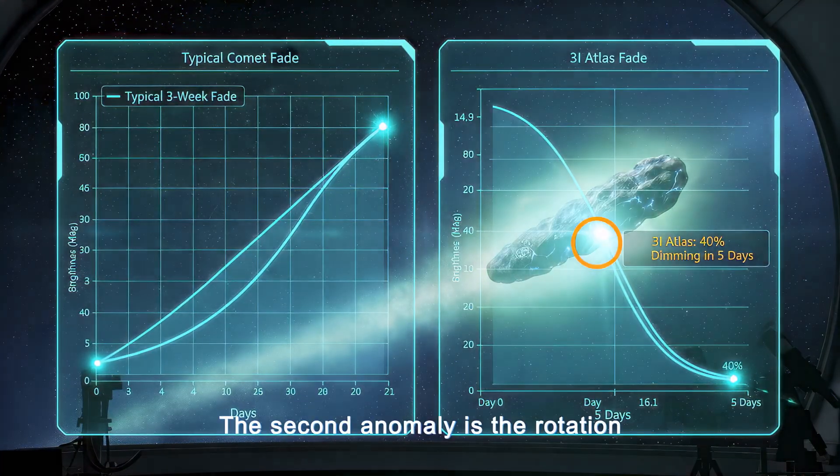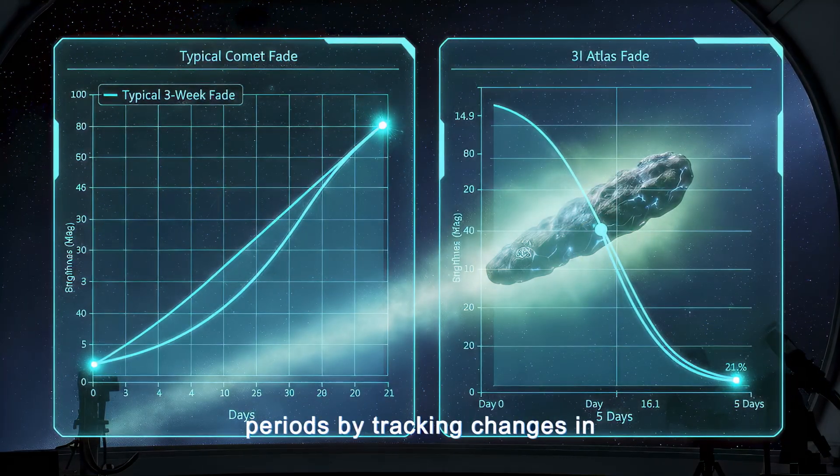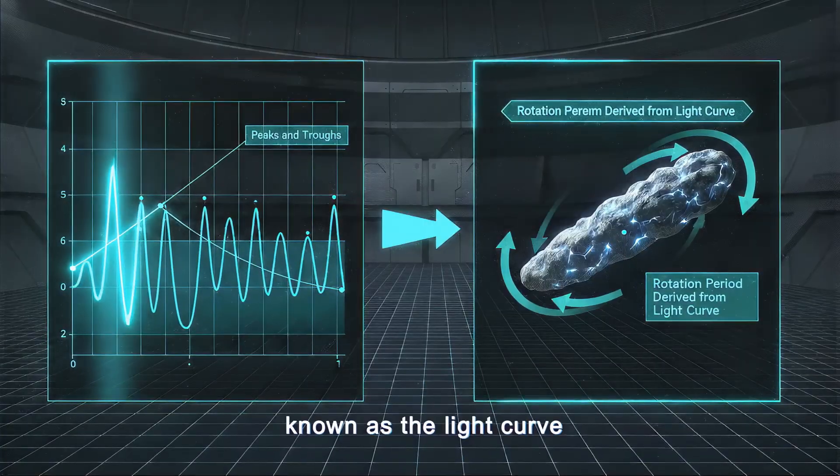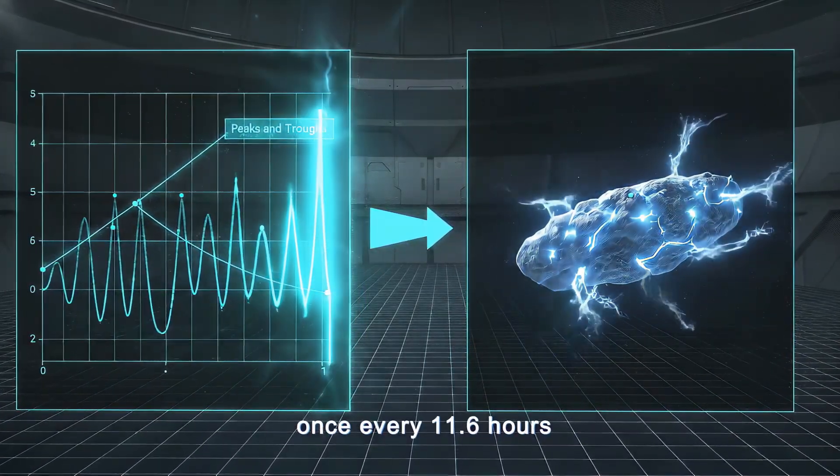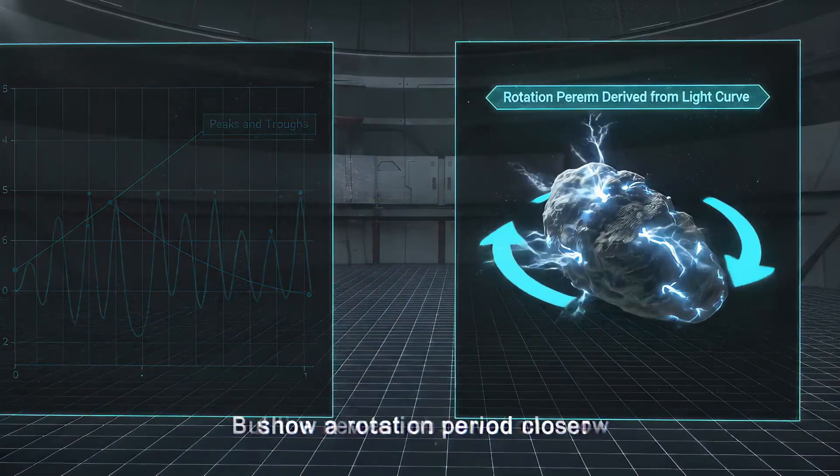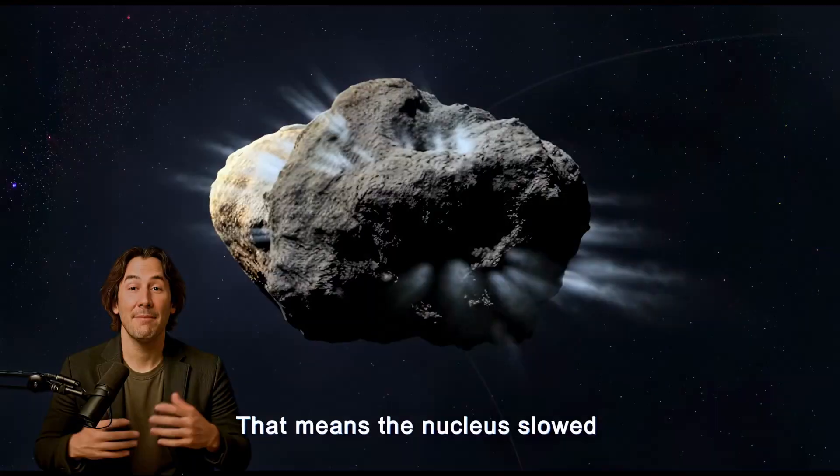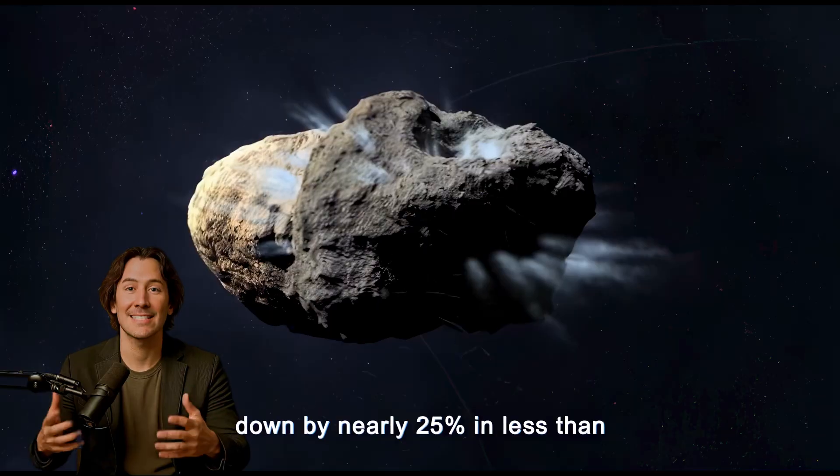The second anomaly is the rotation period shift. Astronomers estimate rotation periods by tracking changes in brightness over time, known as the light curve. Last week, the object appeared to rotate once every 11.6 hours. But the newest observations now show a rotation period closer to 14.3 hours. That means the nucleus slowed down by nearly 25% in less than a week.